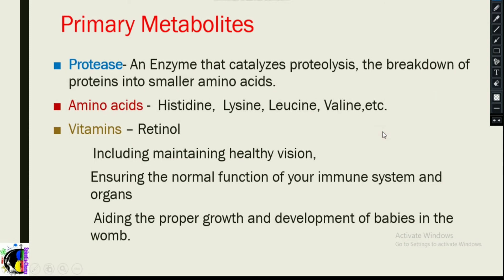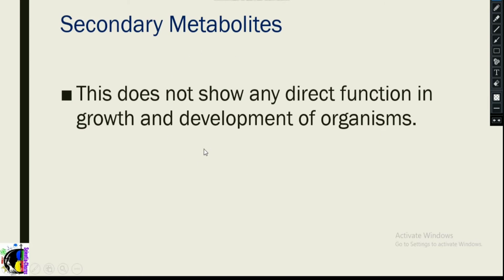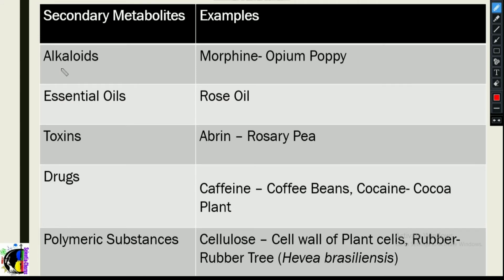Now, secondary metabolites do not show any direct function in the growth and development of organisms. Examples include alkaloids, essential oils, toxins, drugs, and polymeric substances. For alkaloids, morphine is an example — it was the first alkaloid to be found, extracted from the opium poppy plant.